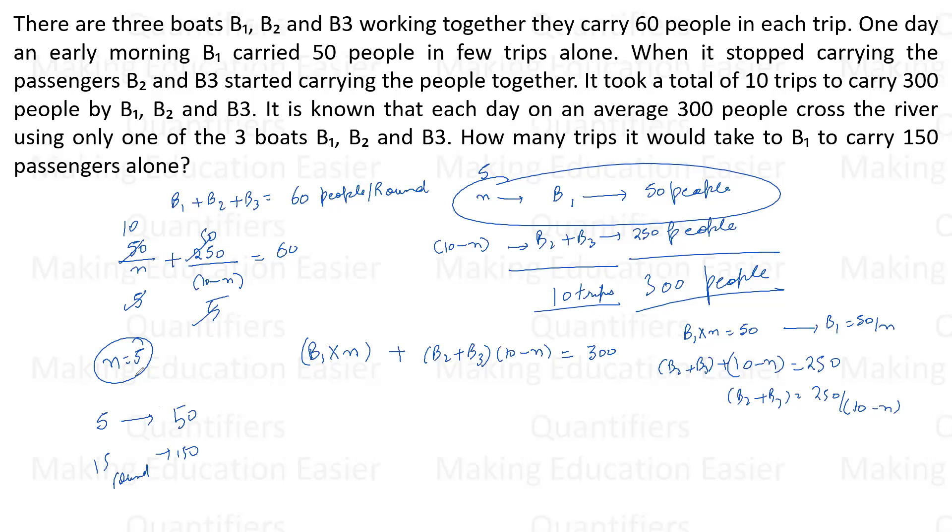Or you can say that 5 rounds, 50 people, which means efficiency of B1 is 10 people per round. And since B1 has to carry 150 people, so 150 by 10, the answer is 15 rounds. Simple as that.